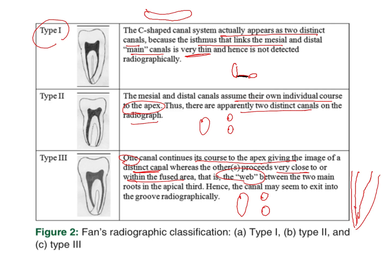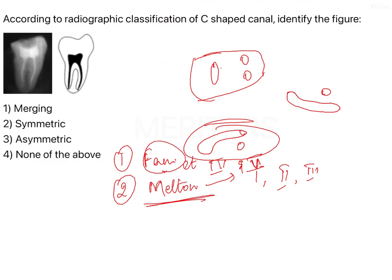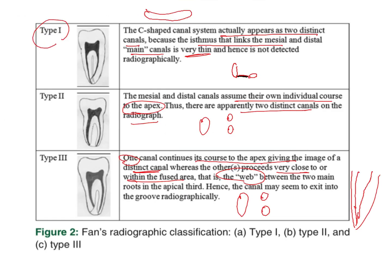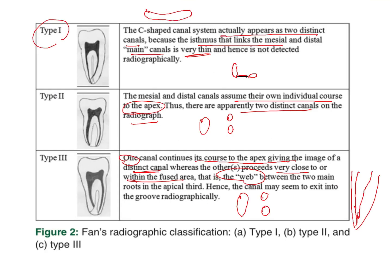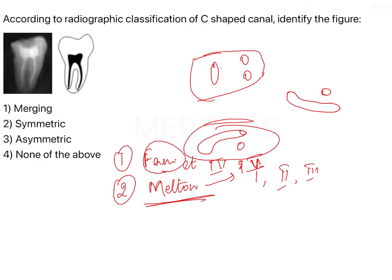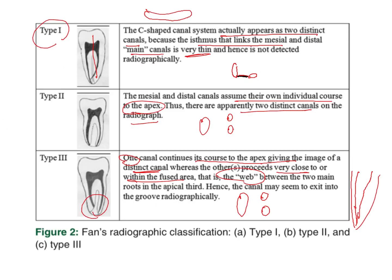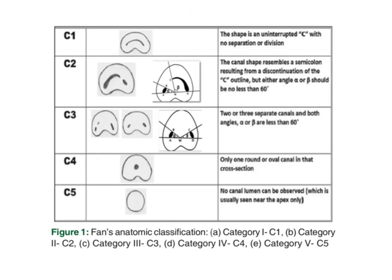As you can see in the question, type 1 would be asymmetric, type 2 would be symmetric, and type 3 is merging — because the canals merge towards the apex. That is why type 3 is called merging.